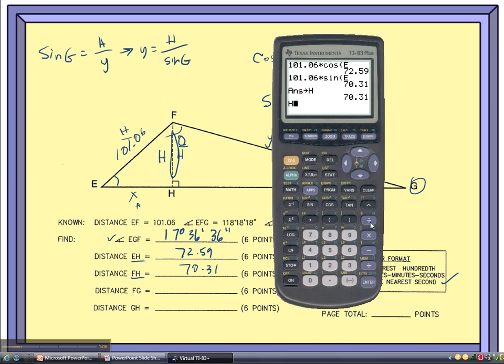H divided by the sine of G. Hit enter. Already rounds it off for me. 232.40.